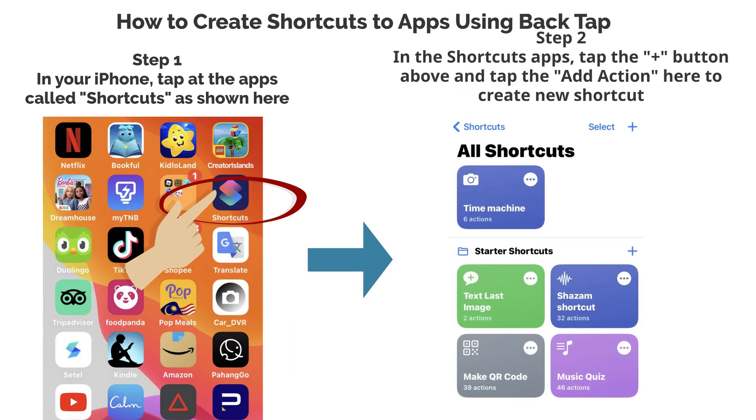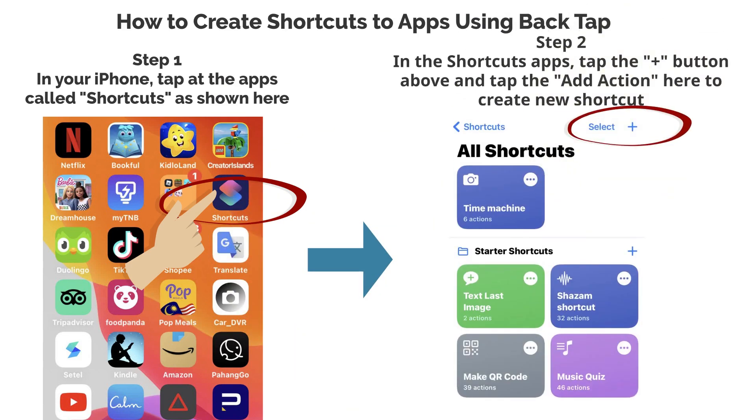Step 2. In the Shortcuts app, tap the plus button above and tap the add action here to create a new shortcut.